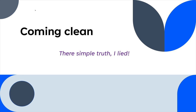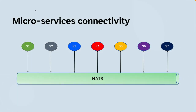Before we get into that example, I have to tell you something: in the previous video I sort of lied to you, so that I could simplify the explanation of how things are different in terms of how we used to connect microservices together. NATS is all about messaging. The services that are talking to NATS are all clients — they're just clients of NATS and they really don't know about each other.